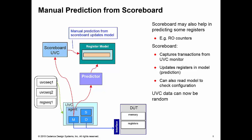And we could use a combination of all of these prediction modes if we wanted to, to keep our register model up to date. So that's the overview of the different prediction modes in UVM register modeling. I hope you found it useful.